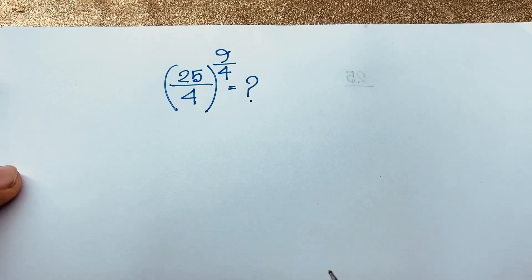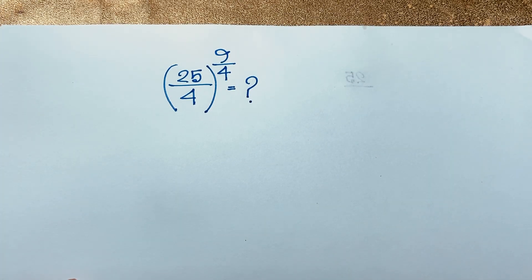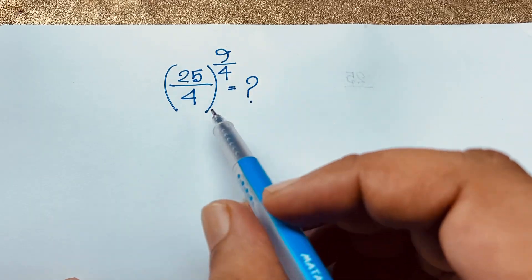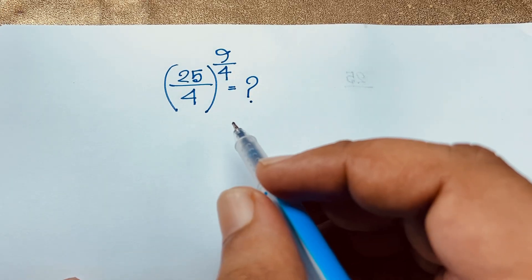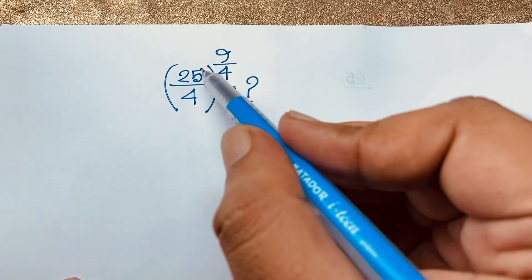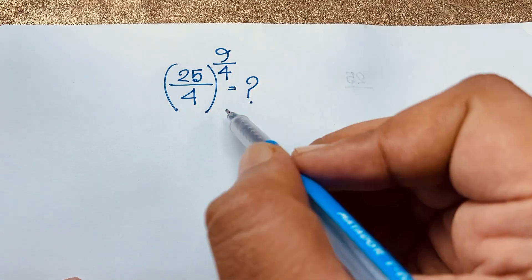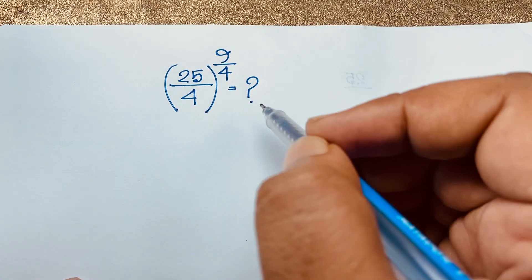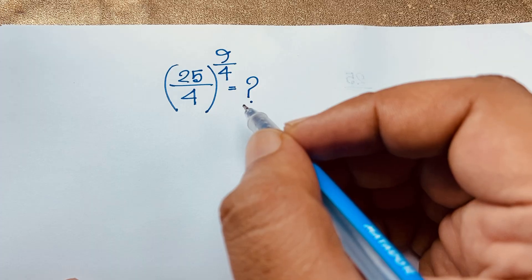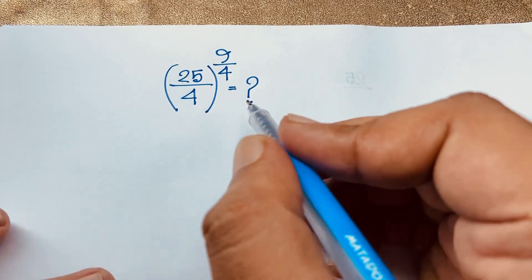Hello everyone. In this video we solve a math problem — how to simplify: 25 over 4, whole to the power 9 over 4. It is an easy math problem. Let's start the solution.